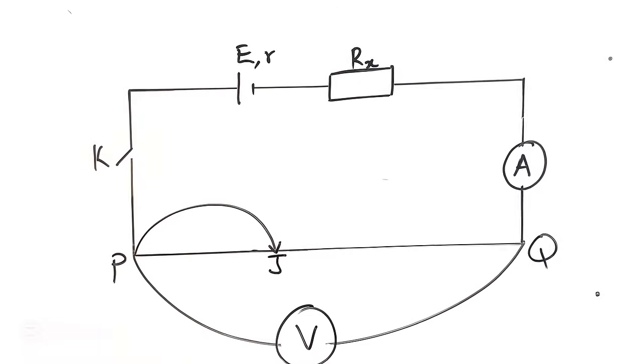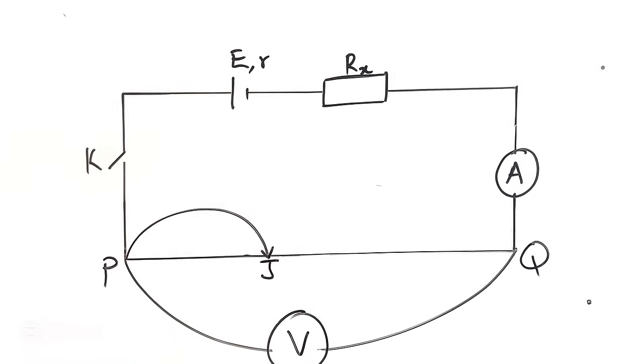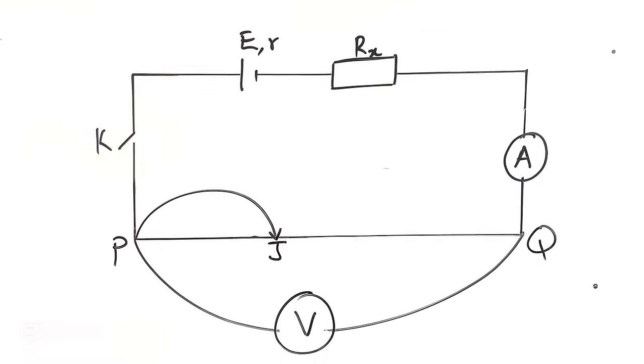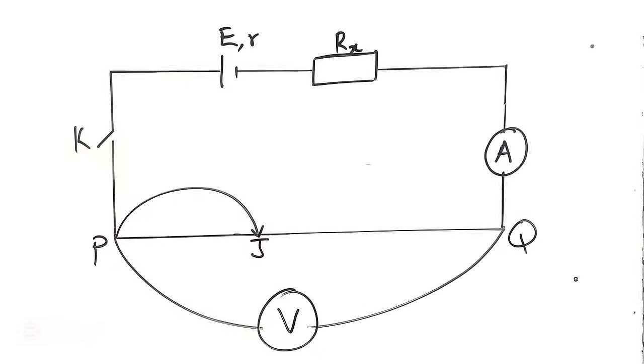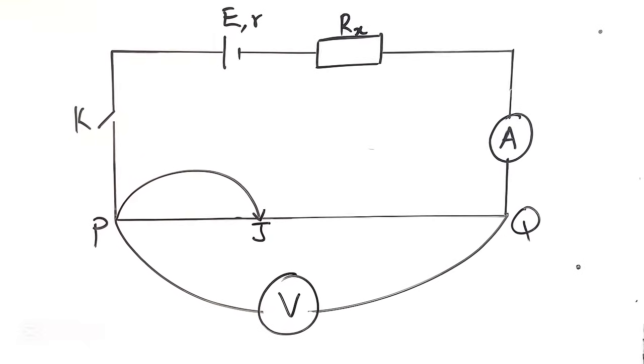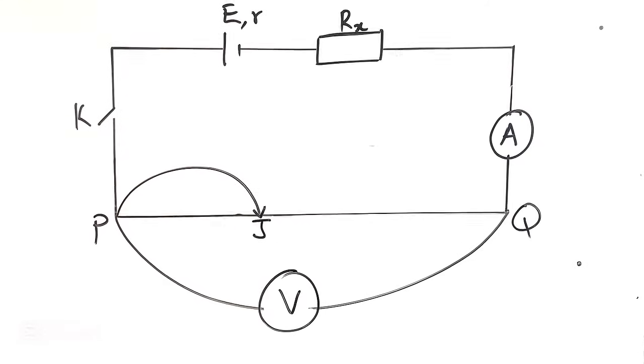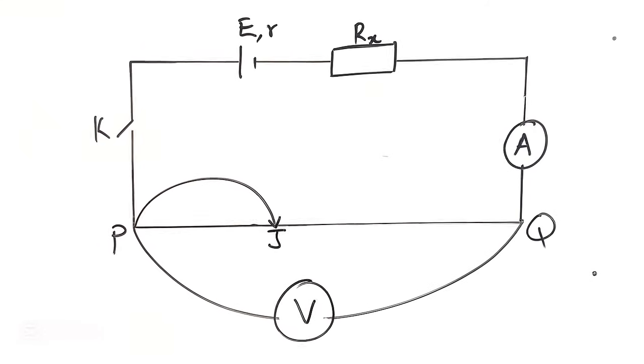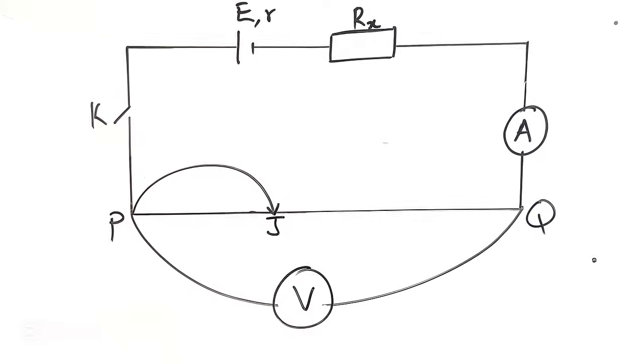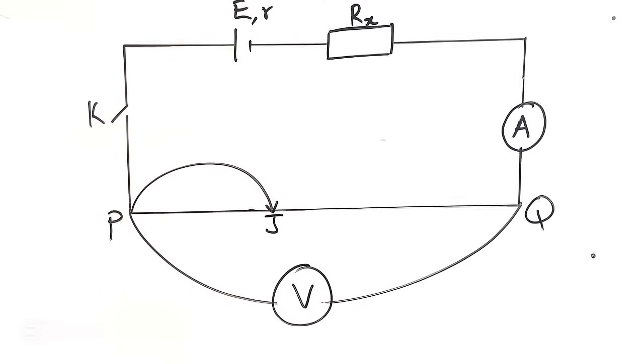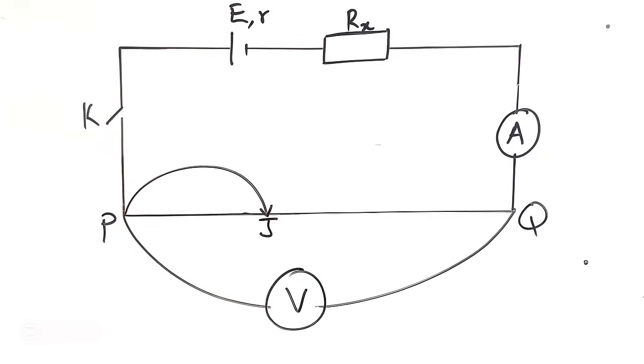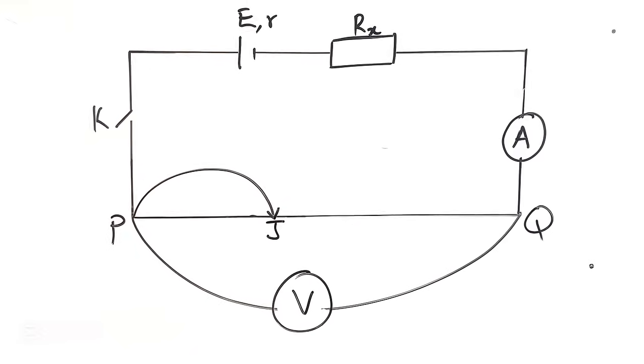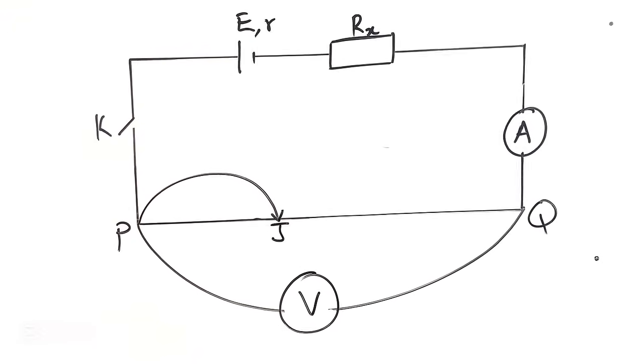From then to E, E is the battery, and R sub X, which is the unknown resistor given, and then A, which is the ammeter, Q, which is the 100 cm part of the potentiometer, and then J is where the jokey should be, and that is V, which is measuring the voltmeter between P and Q, which I'm going to explain later.